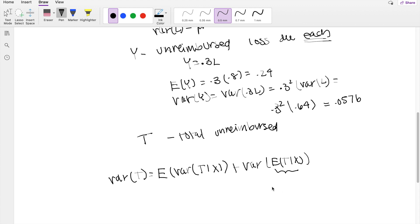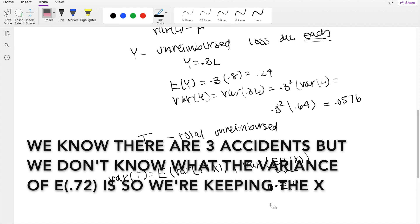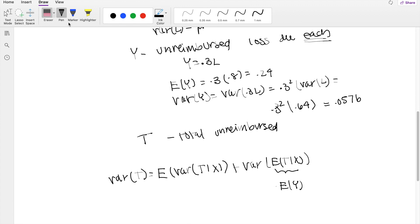So intuitively, because we know that it's independent, let's say there's like 6 accidents. Then we know that the total unreimbursed part given that there is 6 accidents is going to be 6 times the expected value of each accident. But we don't know what X is. So we can just say this is equal to X.